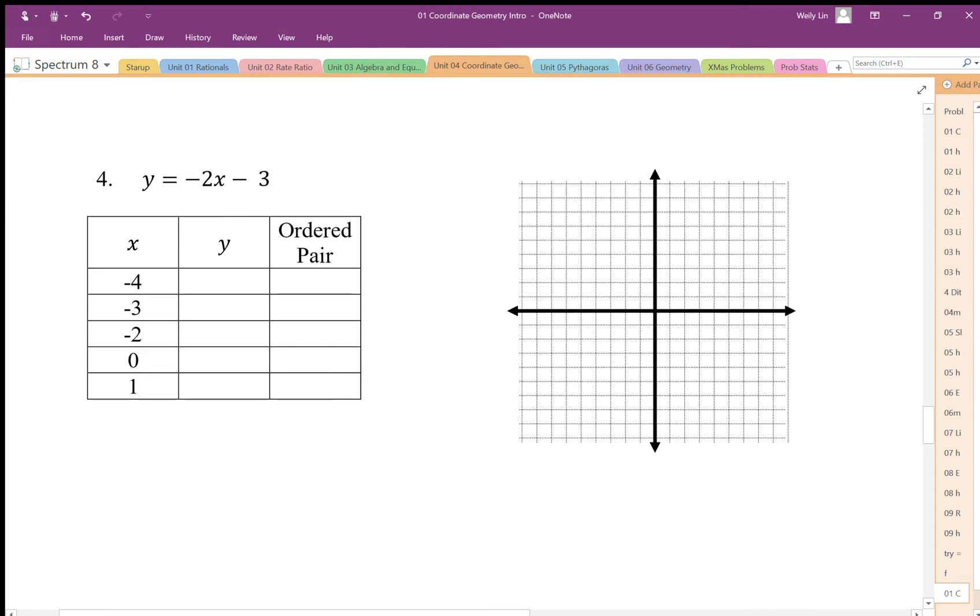Here again, plug it in. Watch the double negatives. It's going to be positive 8 minus 3. Negative 4 gives positive 5. Negative 3 is going to give us positive 3.